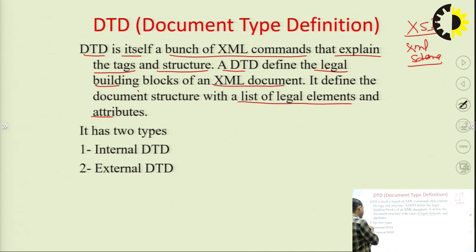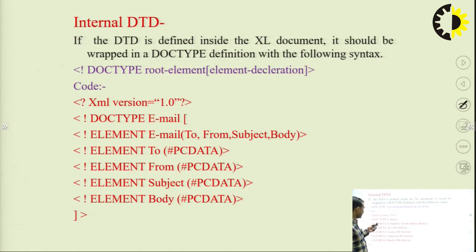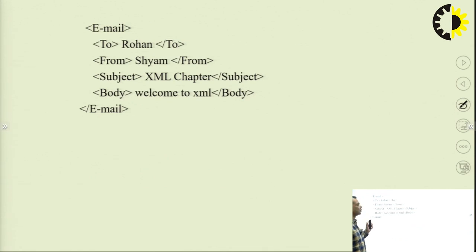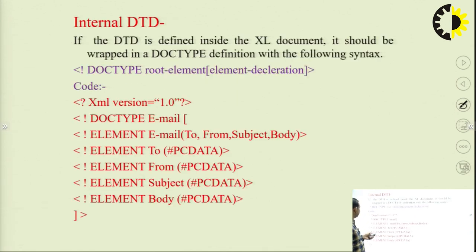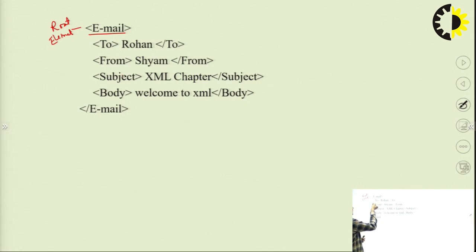There are two types of DTD: internal DTD and external DTD. In our example XML code, the root element is 'email', with child elements 'to', 'from', 'body', and 'subject'. XML is also case sensitive.